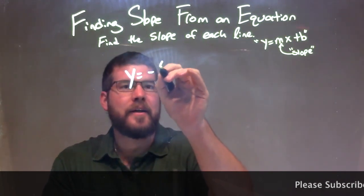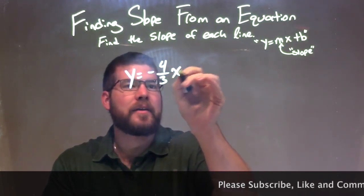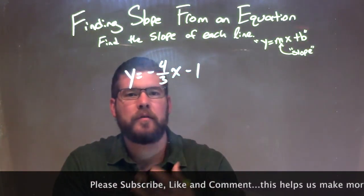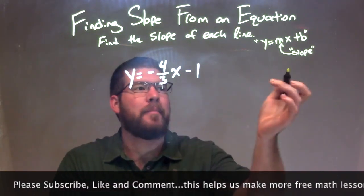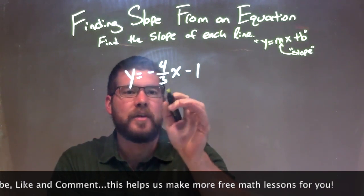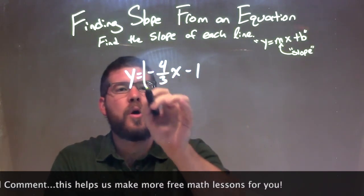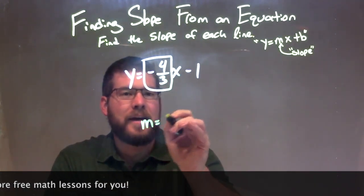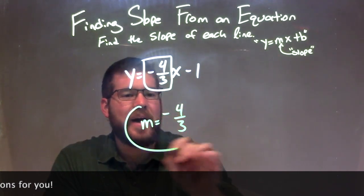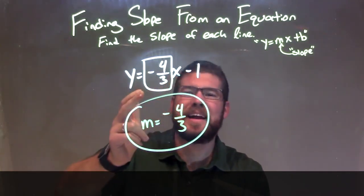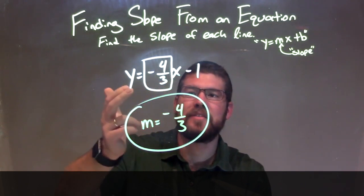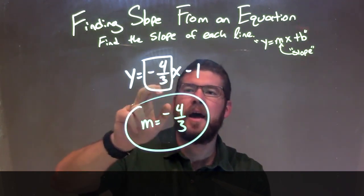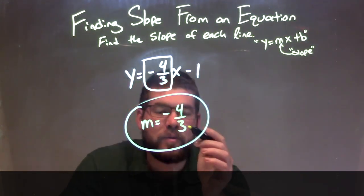y equals negative 4 thirds x minus 1. If I was given this equation and I wanted to find the slope, I notice it's already in slope-intercept form. Here's our slope, and there's our intercept. The key part is the slope — the coefficient in front of x — which is going to be our slope for the whole equation. So I'll write it down: negative 4 thirds. That is our final answer. Once we identify the coefficient in front of x in slope-intercept form, y equals mx plus b, our m value is our slope — negative 4 thirds.